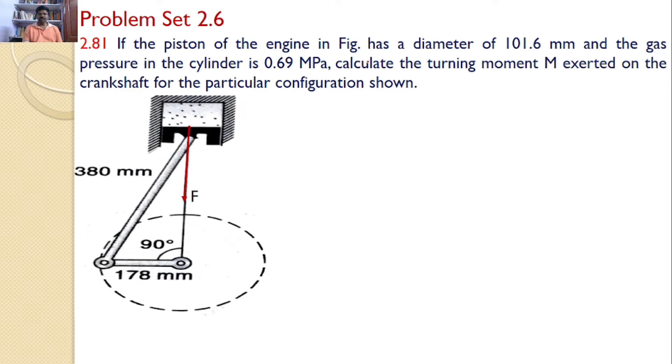If the piston of the engine in the figure has a diameter of 101.6 mm and the gas pressure on the cylinder is 0.69 megapascals, calculate the turning moment M exerted on the crankshaft for the particular configuration shown.